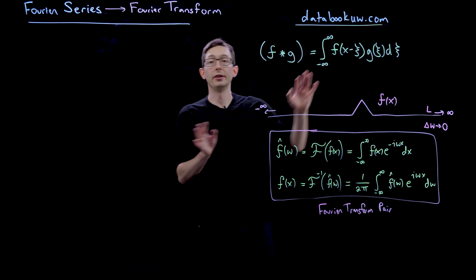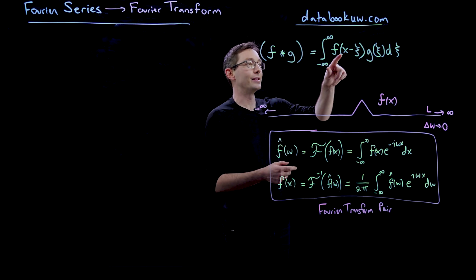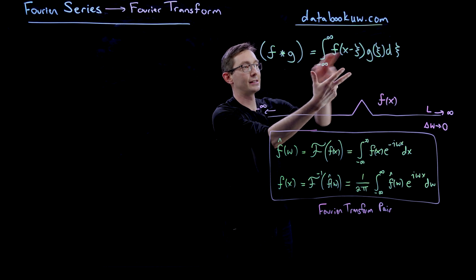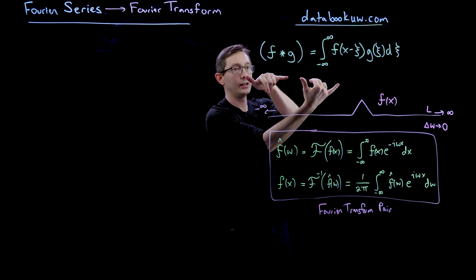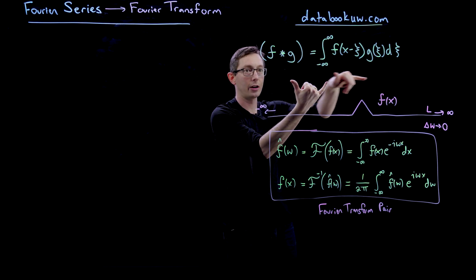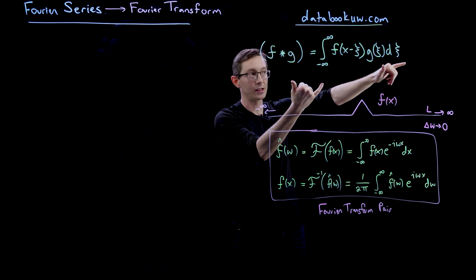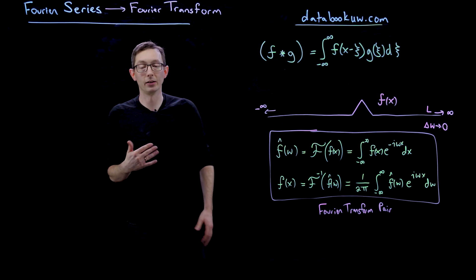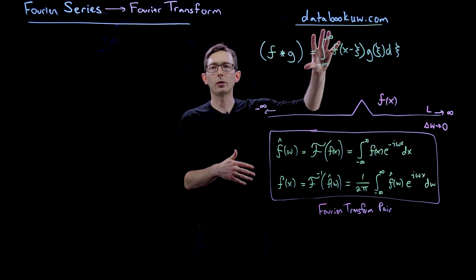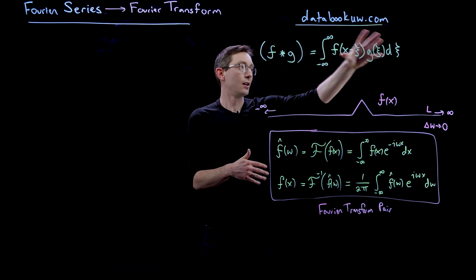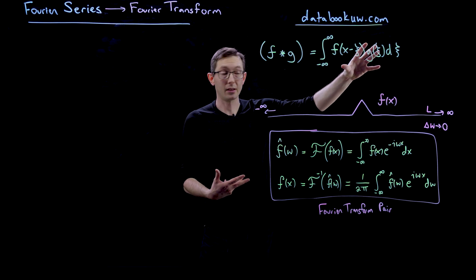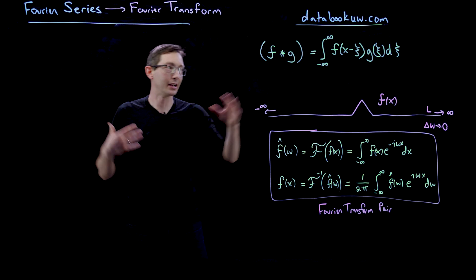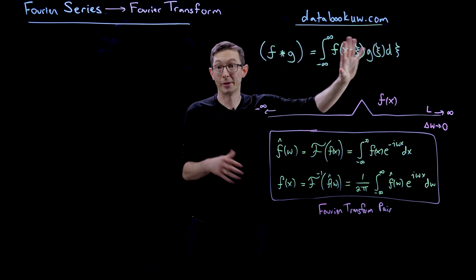You have some dummy variable xi that you're integrating with respect to. This x minus xi essentially means that as xi goes from negative infinity to infinity, we're sliding our function g across our function f, or vice versa, and we're adding up their product as you slide this across from negative infinity to infinity. This is a notoriously challenging integral to compute in practice, and so the Fourier transform is going to massively simplify this rather convoluted expression.